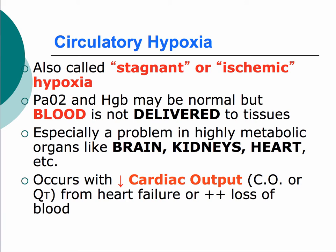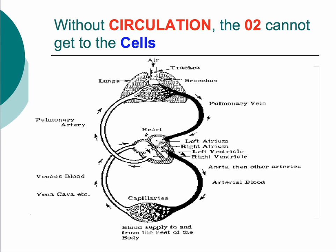Circulatory hypoxia is more of a blood delivery issue. The heart has to deliver blood to all tissues, and if it can't, it doesn't matter how beautifully oxygenated the blood is — those tissues will become hypoxic. Sometimes called ischemic hypoxia, it's really important for the brain, kidneys, and heart to receive good cardiac output. Without circulation, it doesn't matter how well oxygenated the blood is; the cells can't get to it.